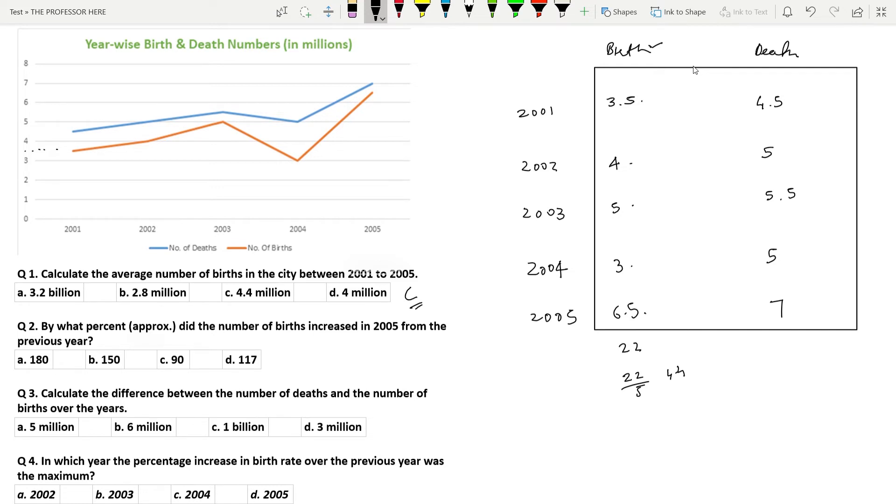Question number 2. By what percent approximately did the number of births increase in 2005 from the previous year? So number of birth in 2005 is 6.5 and number of birth in previous year 2004 is 3. So the difference is 6.5 minus 3 divided by the initial number of births which is 3 into 100. So that becomes 3.5 divided by 3 into 100.